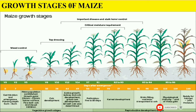Earlier we discussed growth stages of rice and wheat. Now we are discussing about growth stages of maize. It is the cereal grain which was first grown by the people in ancient Central America. It is now the third most important cereal crop in the world. Maize is a leafy stalk whose kernels have seeds inside and it is a very important crop.